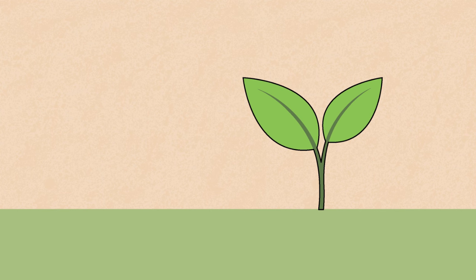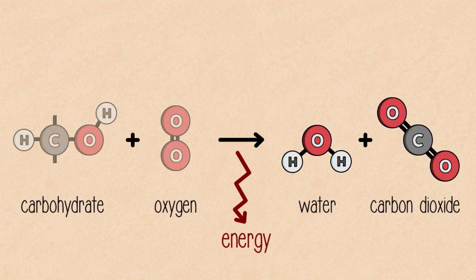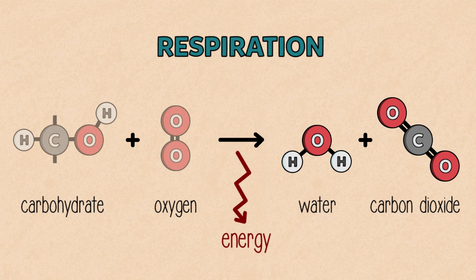Energy is now stored, and living things can use the carbohydrates to build their bodies and structures. To obtain energy, they simply reverse this reaction, letting the oxygen and the carbohydrate rejoin, forming carbon dioxide and water all over again. And this is respiration.